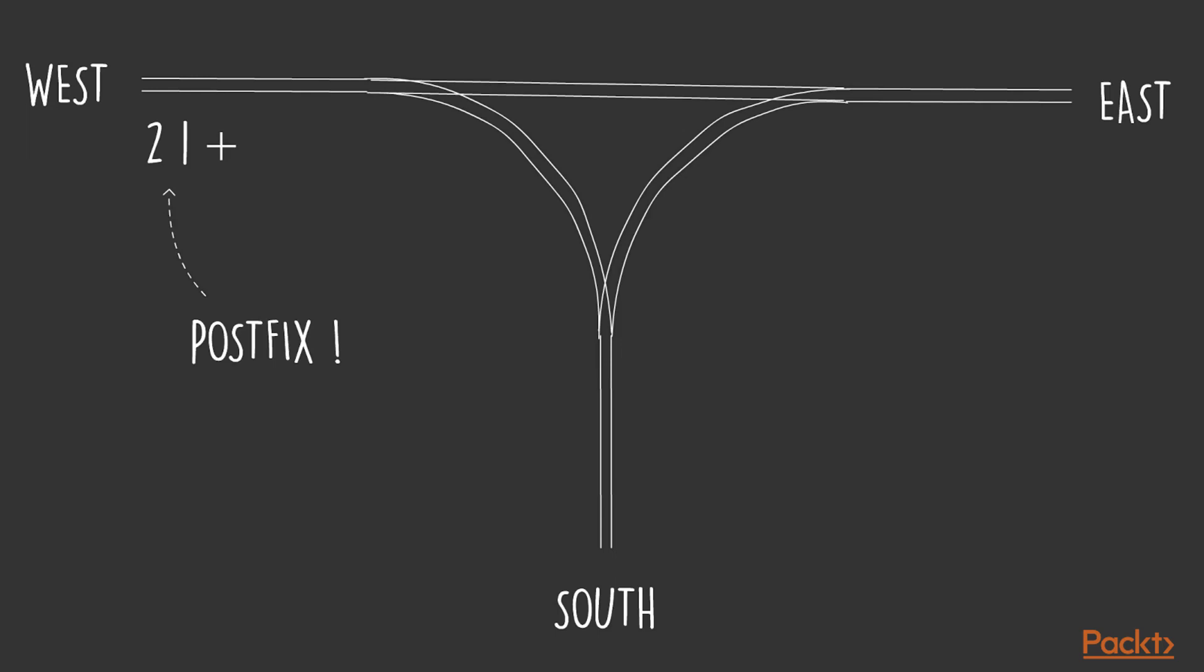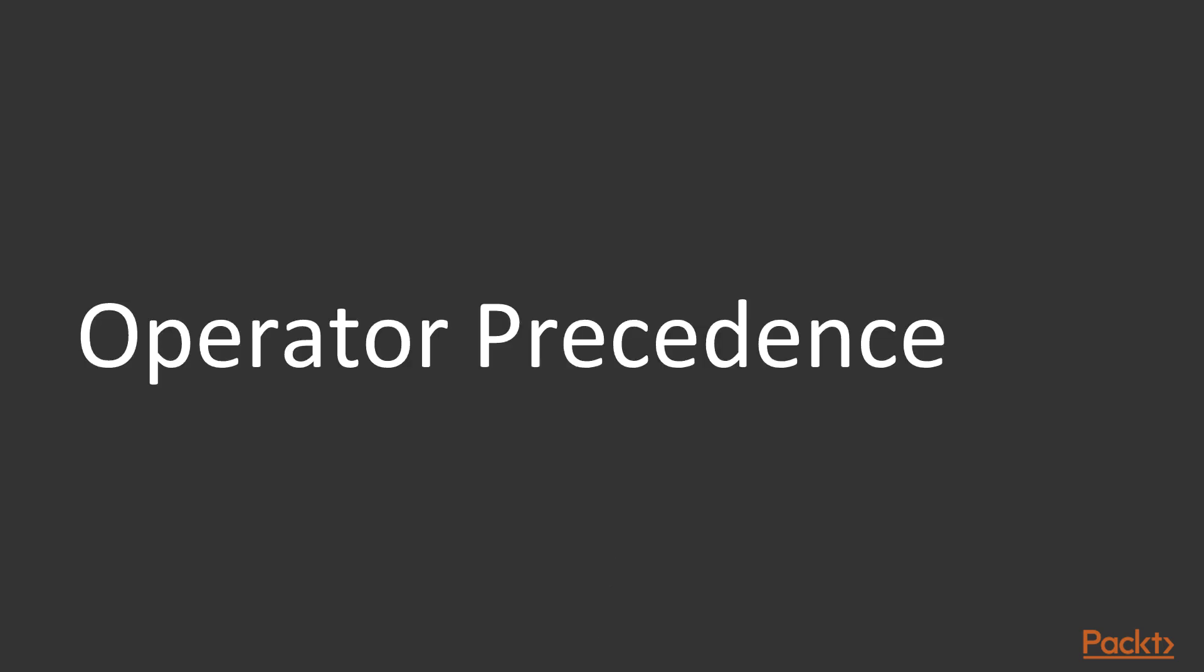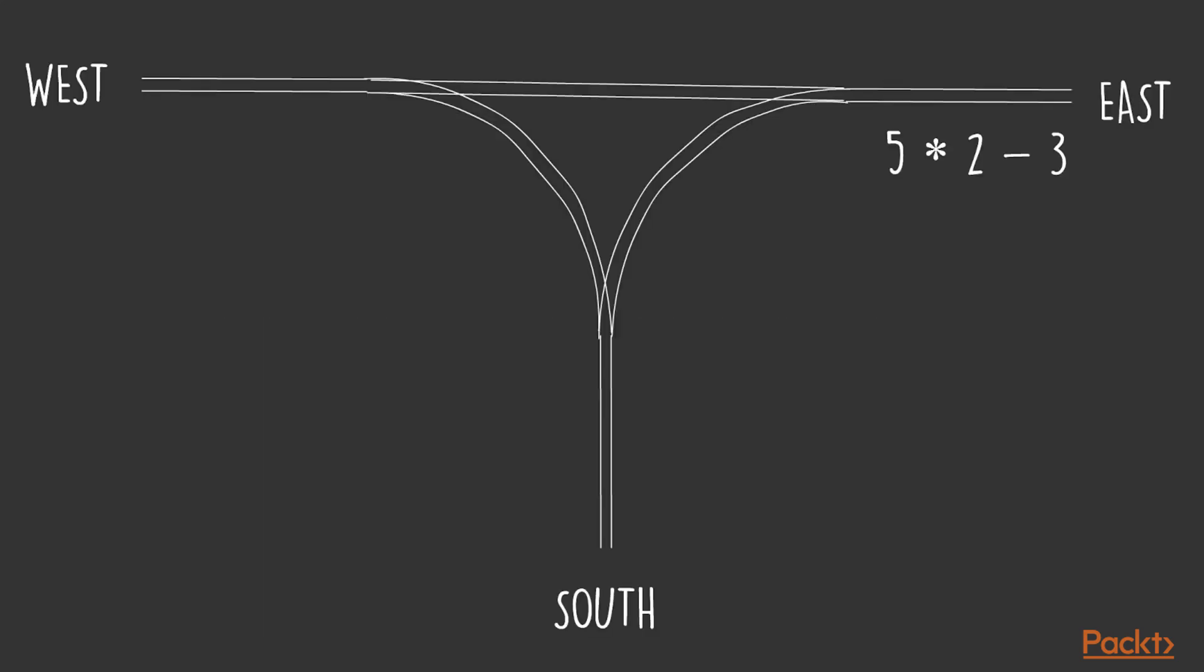Let's now pick an example in which we have to deal with operator precedence. Again, we start by placing the input expression on the east side. We start with number 5, and again, the rule is the same, we move from east to west. Next on the list is multiplication. Again, the rule here is the same, operators go south. So we move the multiplication sign to south. Next on the list is another number, number 2. The rule is the same, from east to west.